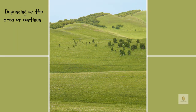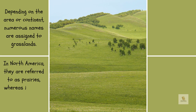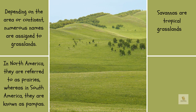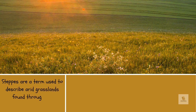Depending on the area or continent, numerous names are assigned to grasslands. In North America, they are referred to as prairies, whereas in South America, they are known as pampas. Savannas are tropical grasslands in Africa that get periodic rainfall. In Australia, these regions are referred to as rangelands. Steppes are a term used to describe arid grasslands found throughout Southeast Europe and Asia.